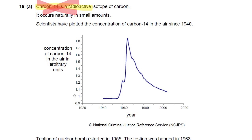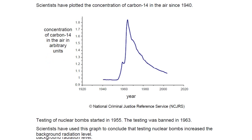On the y-axis, carbon-14 in the air is measured in arbitrary units. That means there's no specific unit — it just helps you compare, so it's arbitrary. What did happen there? Well, the question goes on to tell you a little bit about that.